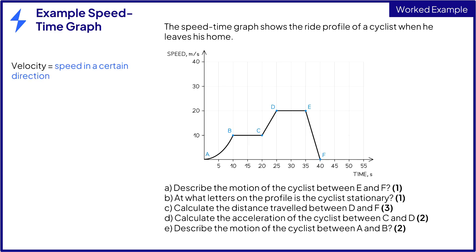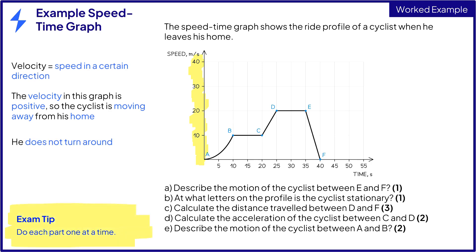Velocity equals speed in a certain direction. The velocity on this graph is all positive, so we know the cyclist is moving away from his home and he does not turn around. We will work through each part of this question step by step.